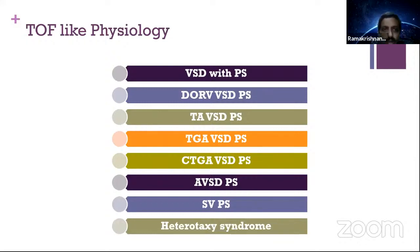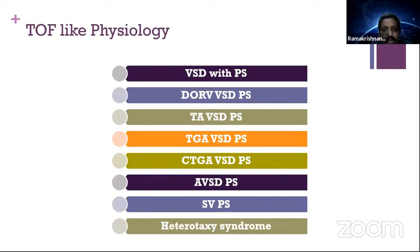There are various tetralogy-like physiology differentials you should always keep in mind: DORV with VSD and PS, tricuspid atresia, TGA with VSD and PS, CCTGA with VSD and PS, AVSD with PS, single ventricle with PS, and various heterotaxy syndromes with left or right isomerism.